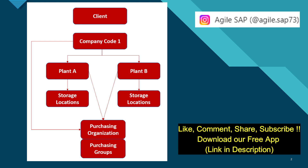Now, what are company codes? The company code is created in the FI module and it is linked to the MM module. The company code is an independent company — it is a legal entity and has its own profit and loss. The company code maintains all the books of accounts.